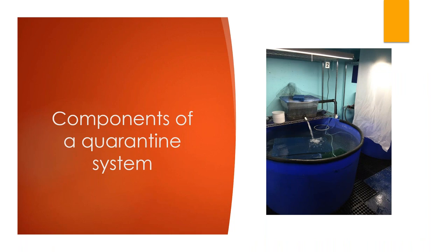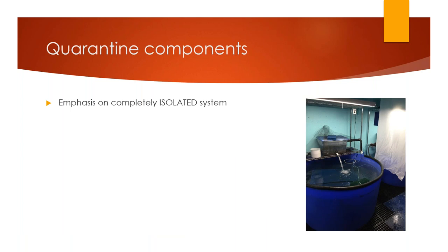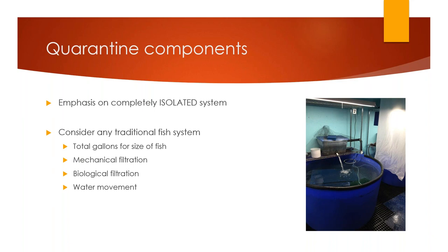Now we'll go over the components of a quarantine system. The picture on the right is an example of one of our hospital tanks. The most important thing to consider is a completely isolated system — completely isolated from the current population. As with any traditional fish system, you need to consider the total gallons for the size of fish, mechanical filtration, biological filtration, water movement, predator control, and water quality.